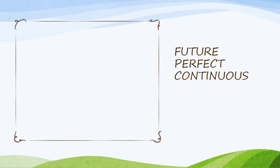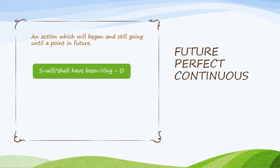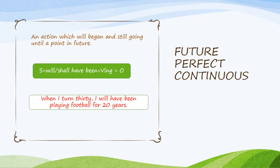Future perfect continuous — an action which will begin and still be going on until a point in the future. The structure is: Subject plus will or shall have been plus verb ING plus object. For example: When I turn 30, I will have been playing football for 20 years.